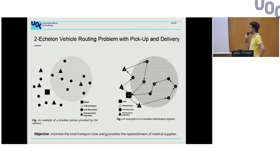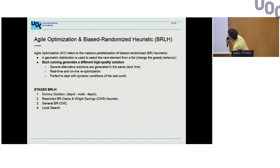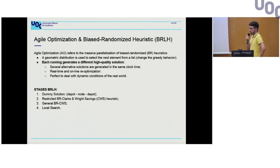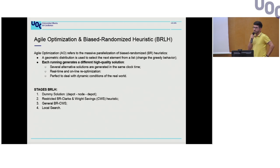The objective when solving this problem is to minimize total transportation time, while also replenishing medical supplies in the pharmaceutical labs. To solve this, we propose agile optimization, which refers to the massive parallelization of randomized techniques. These methodologies change the behavior of heuristics by introducing randomness.